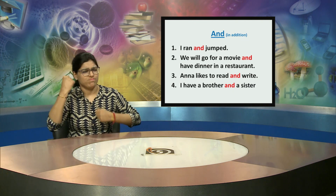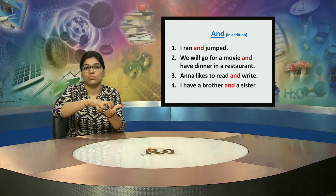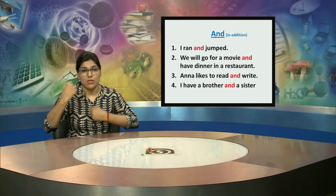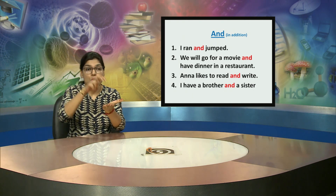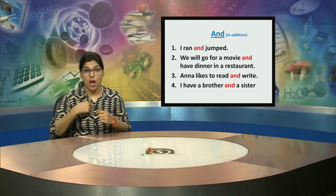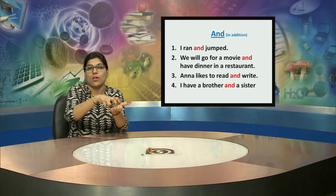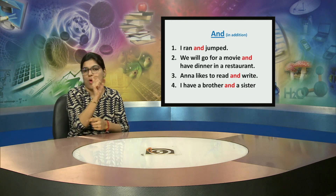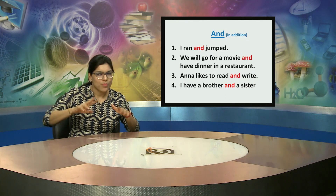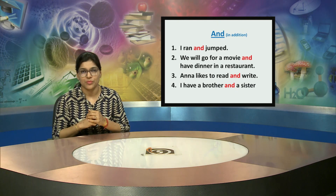First example: I ran and jumped. In the first sentence, 'I ran' is one sentence and 'jumped' is another word. They are connected by the word AND. Both are verbs.